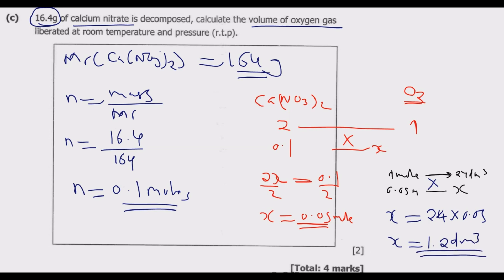That's the volume of oxygen that we are going to produce at room temperature and pressure. You get this 24 from the periodic table. This is how you answer this question to get the 4 marks.